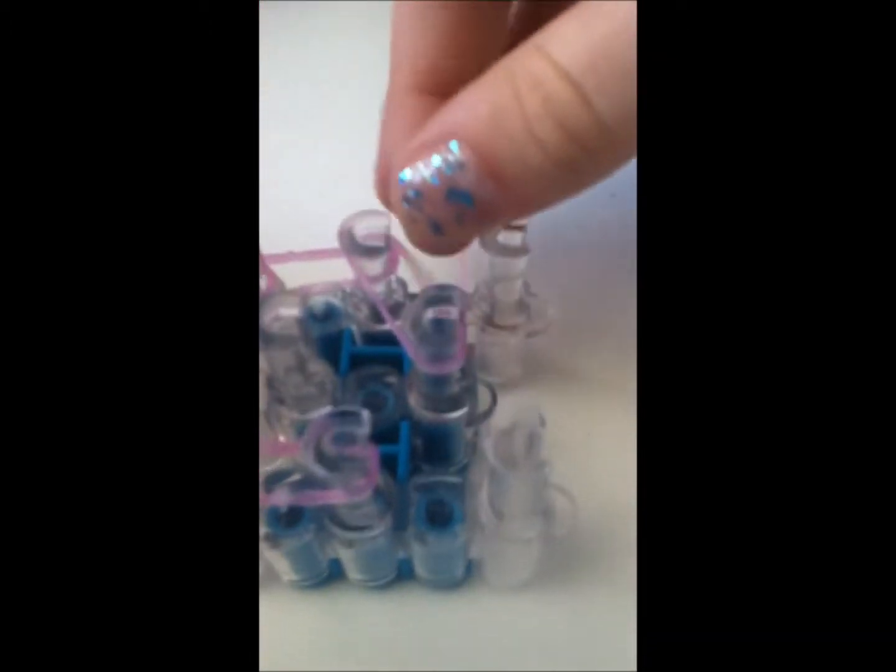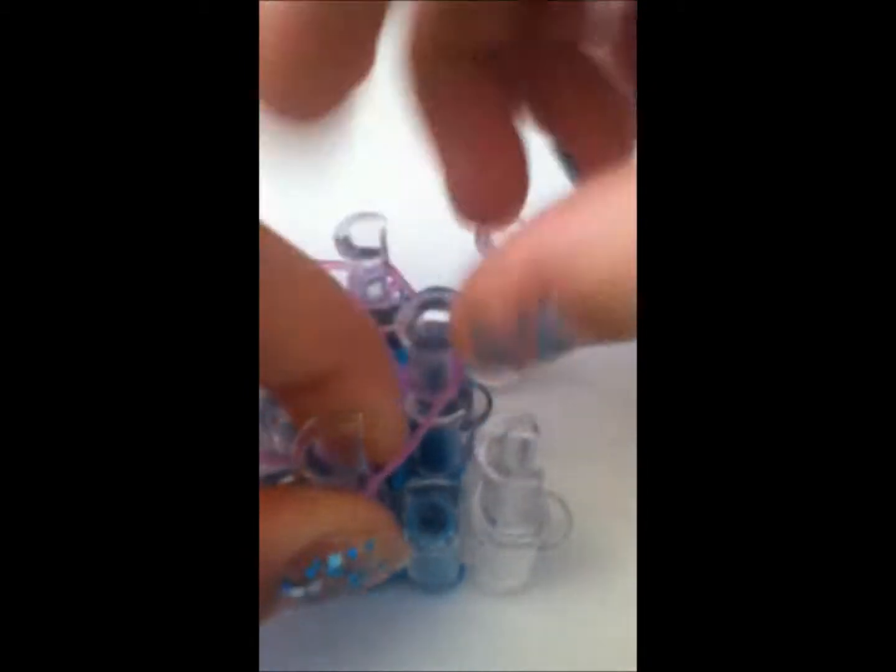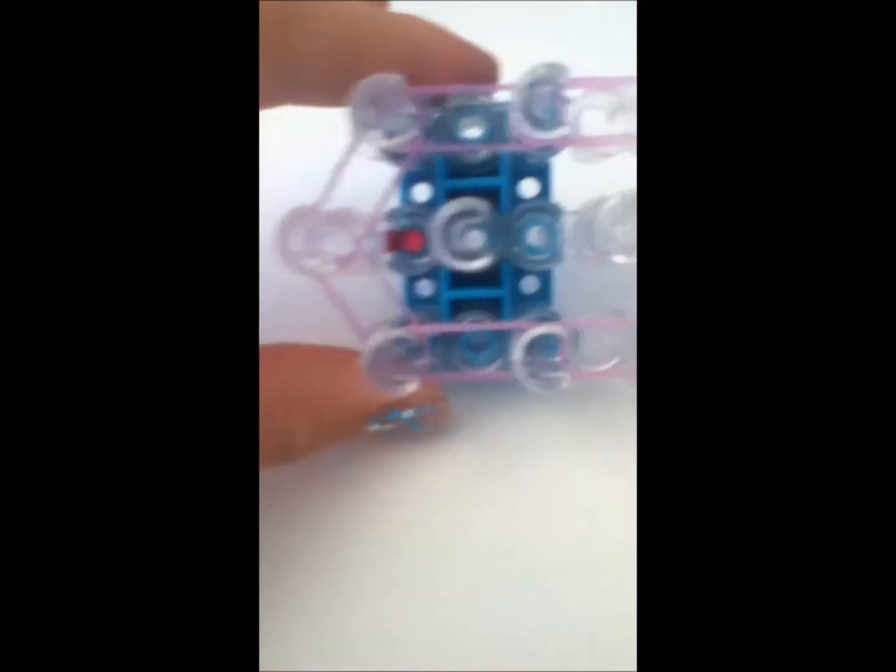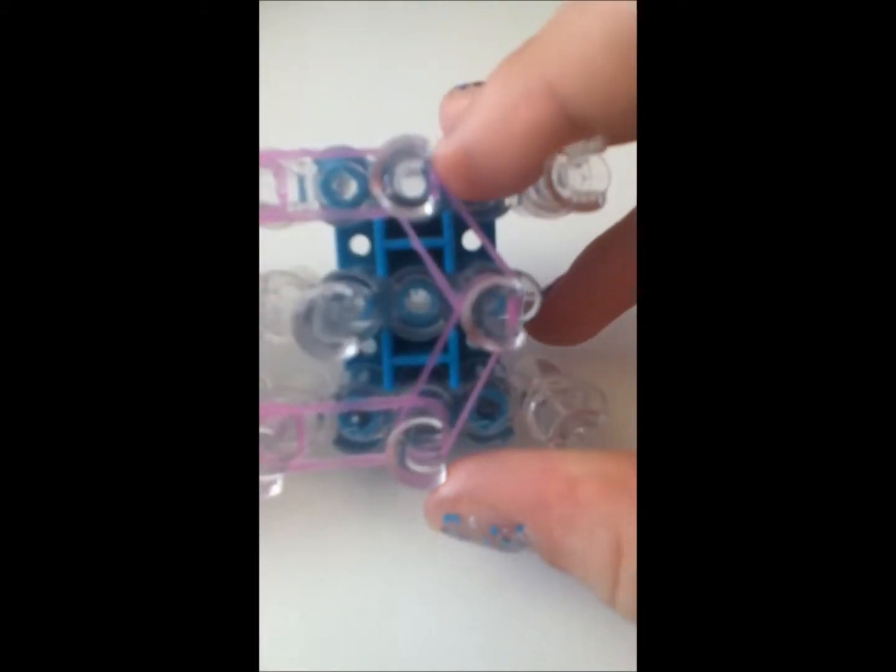So, at the end, you're going to kind of close it off. You'll take another single band, push it down, take another single band, and you're going to pull it over. So, that's how it's closed off. This is what you're going to look like from where you started till the end.